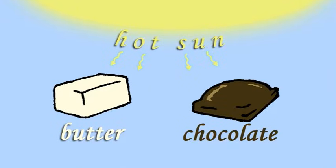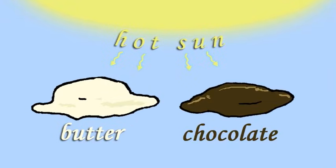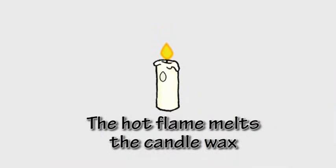Chocolate and butter will grow soft and melt if they are left sitting in the hot sun. And wax near the flame of a burning candle will melt and drip down the side of the candle.